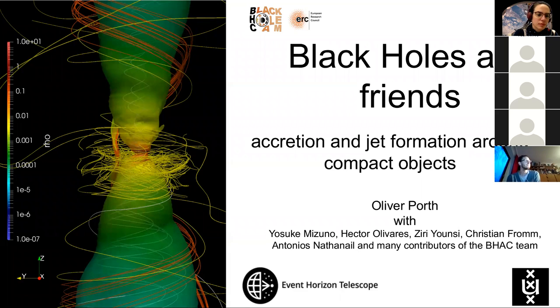Also modeling of jets from rotating magnetospheres related to active galactic nuclei and gamma-ray bursts, studying their formation, their stability, their synchrotron emission. He's also involved in the interpretation of the Event Horizon Telescope observations, many important contributions to these topics. Today he's going to talk about the friends of black holes, as he calls the accretion and jet formation around compact objects. So please, Oliver, you can start your talk.